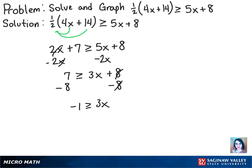Now we can finally divide both sides by 3 and get x alone. So we have x is less than or equal to negative one-third.